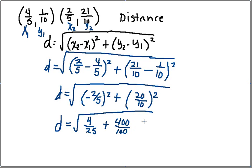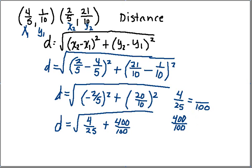Now I have to find the common denominator. So I'll work off to the side: four over twenty-five and four hundred over a hundred. I'm looking at my two denominators — twenty-five and a hundred — and I want the smallest value both go into, which is a hundred. What do I multiply twenty-five by to get a hundred? Four. So I multiply the numerator by four as well: four times four gives me sixteen over a hundred. So four over twenty-five equals sixteen over a hundred.